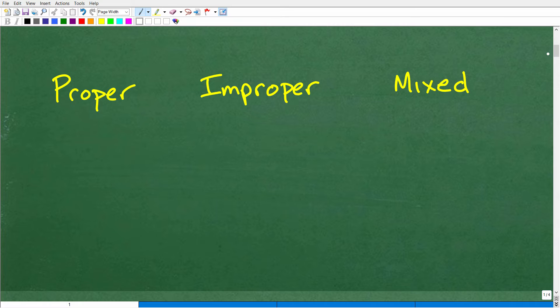Okay, so we're talking about fractions. Let's go ahead and get some definitions down. So I have proper, improper, and mixed numbers. So what we're doing in this video, we're talking about how to go from a mixed number fraction to an improper fraction. But what is a proper fraction? What is an improper fraction? And what is a mixed number fraction?